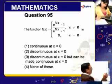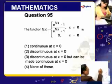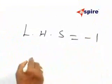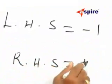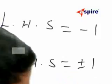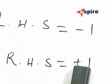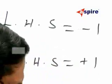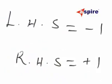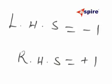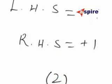Now if you look at it very closely, the left hand side limit is reduced to say minus 1 and the right hand side limit will be reduced to say plus 1. Because these two limits are different, the function is not continuous at x equal to 0. Or in other words, the function is discontinuous at x equal to 0. That is, choice 2 is correct.